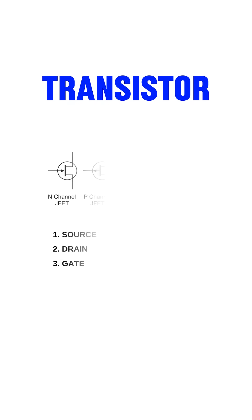For field effect transistors, which we call FETs, the basic logic is that it controls current flow by varying the width of a conducting channel using an electric field.